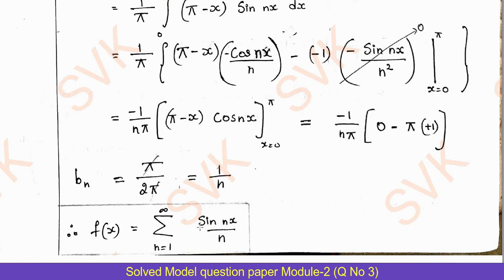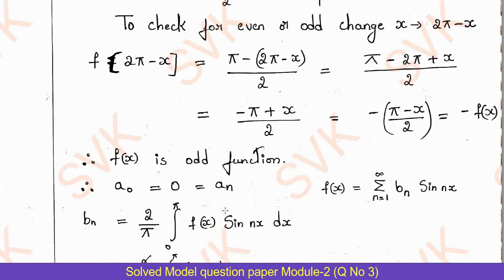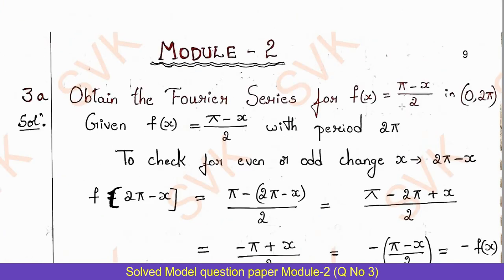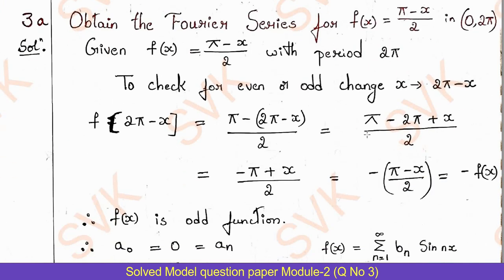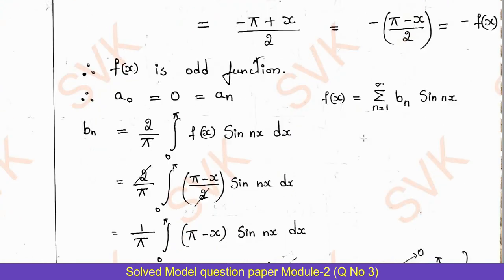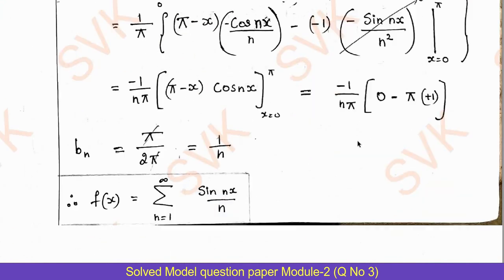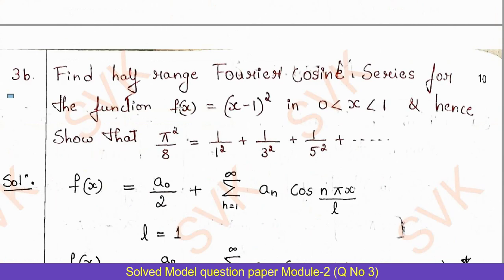Substituting bₙ = 1/n, the Fourier series for f(x) = (π - x)/2 is: f(x) = Σ (n=1 to ∞) sin(nx)/n.